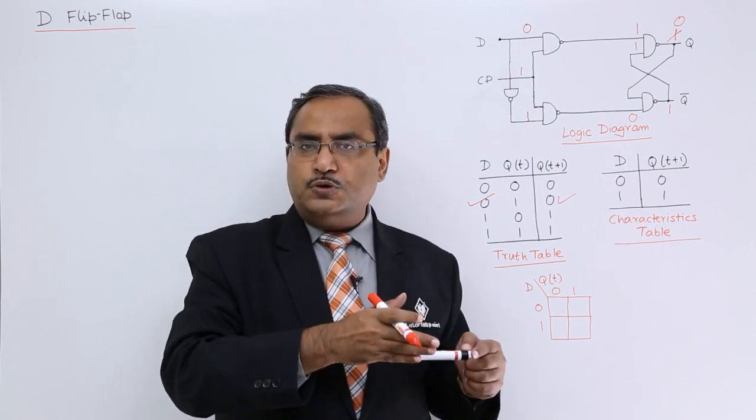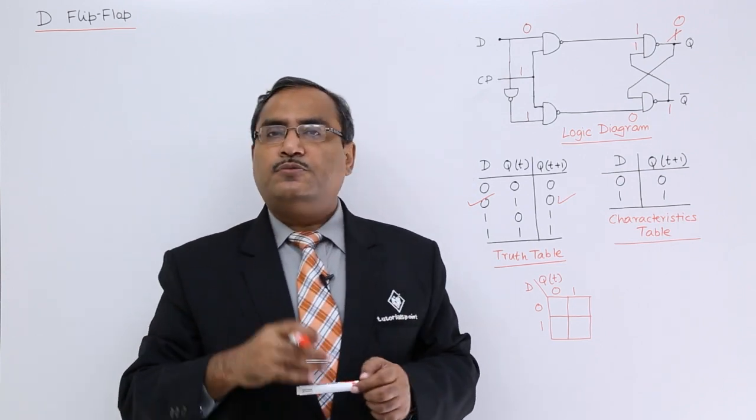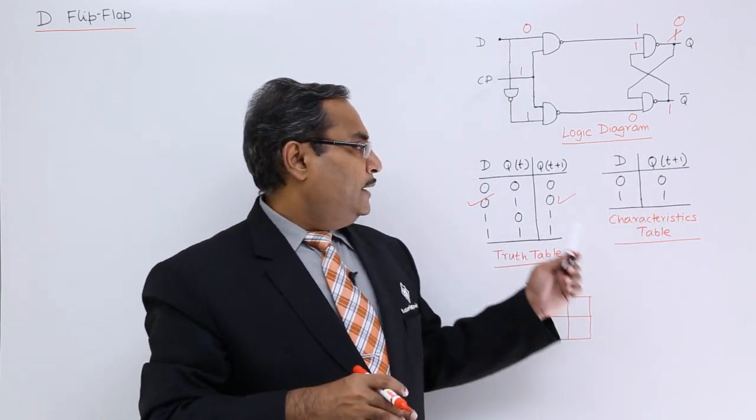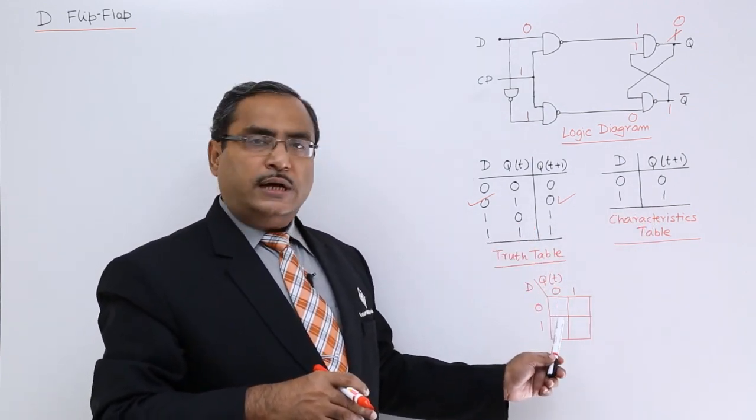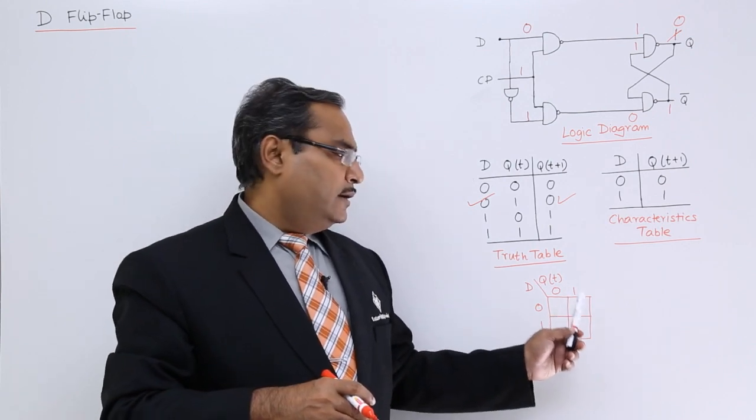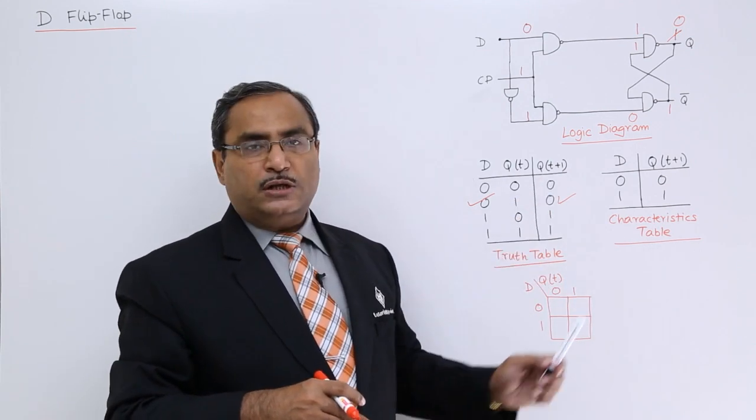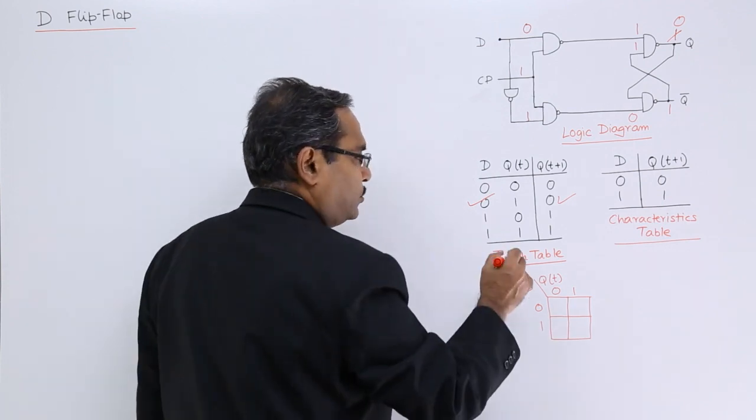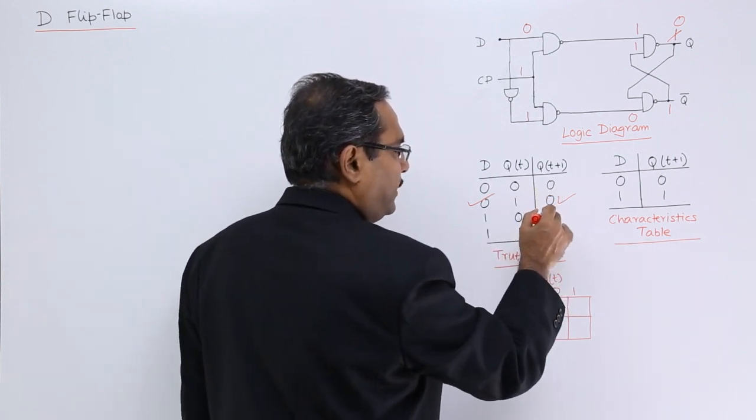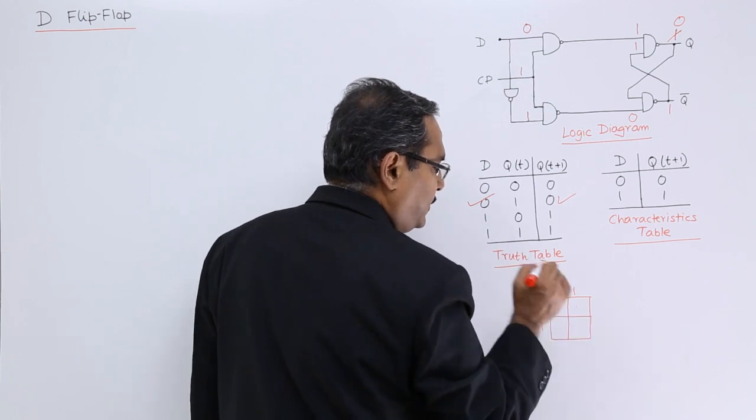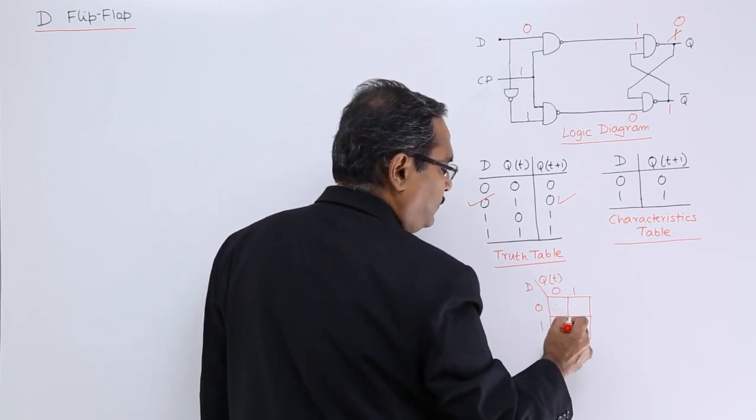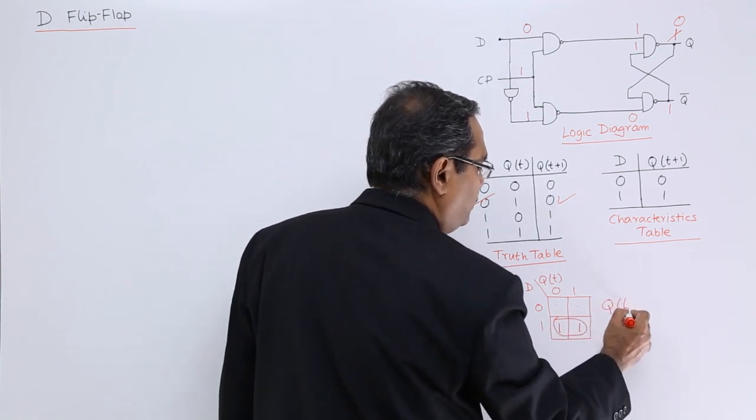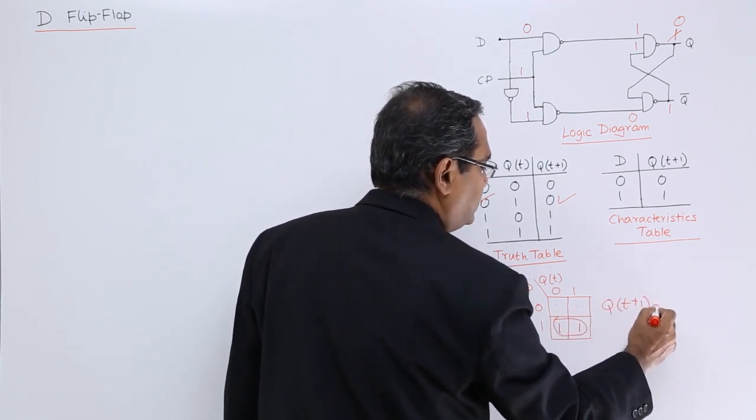Passing this input through the D flip-flop to get it to the output, present input will be the output here. I have plotted this one on this Karnaugh map. I shall plot this one on Karnaugh map. And that after solving, I shall get QT plus 1 that is a characteristic equation of D flip-flop. That is 0, 0 and 1, 1 here. Now if you do this one, we are finding this one as QT plus 1 is equal to D.